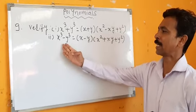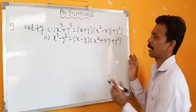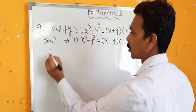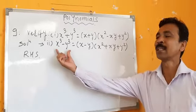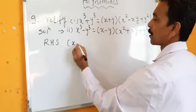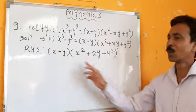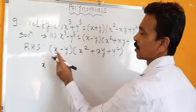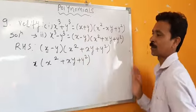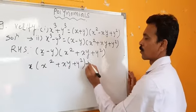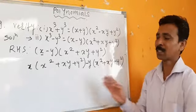Similarly, we will prove the second identity: x cube minus y cube equals (x - y) into (x squared plus xy plus y squared). Taking RHS: multiply x into (x squared plus xy plus y squared) gives x cube plus x squared y plus xy squared. Then minus y into (x squared plus xy plus y squared) gives minus x squared y minus xy squared minus y cube.